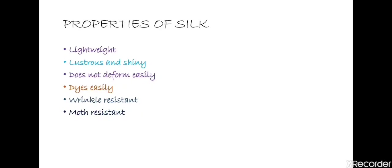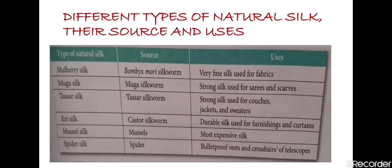Here you can see there are different types of natural silk, their sources, and their uses. We have different varieties of silkworms which are used to produce different qualities of silk for different purposes. Firstly, we have mulberry silk which is obtained from the Bombyx mori silkworm — it is a fine silk used for making fabrics. Next we have Mugga silk, sourced from the Mugga silkworm, which is a strong silk used for making saris and scarves.